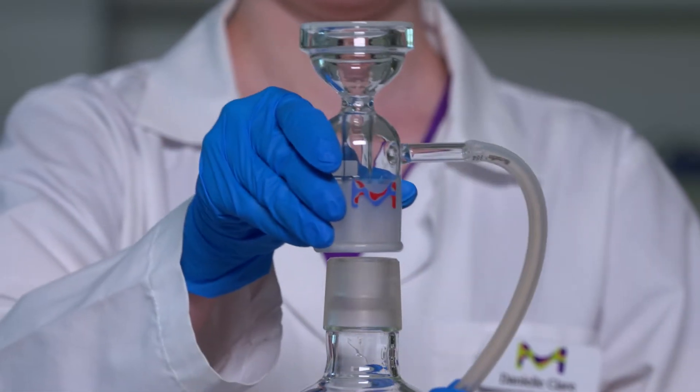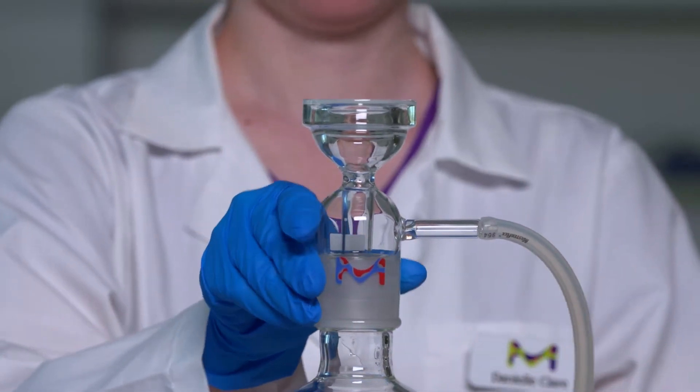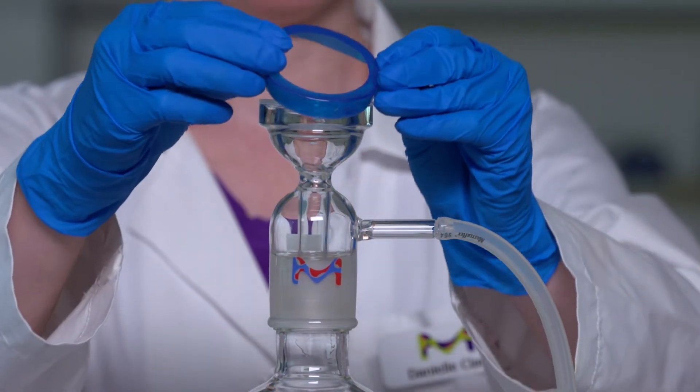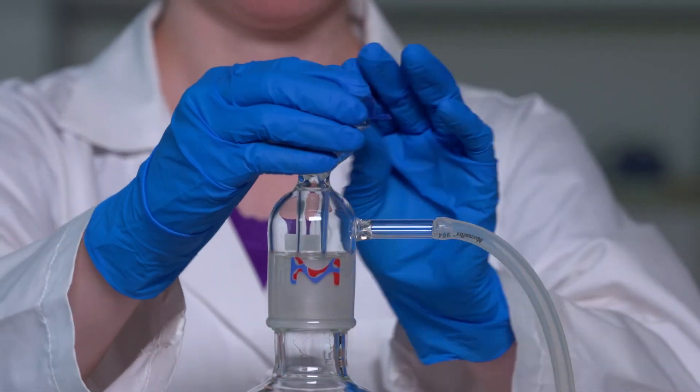At this stage, you can introduce the funnel alignment guide by stretching the ring over the bottom of the vacuum cap or funnel with the tab facing down and aligned with the vacuum sidearm.